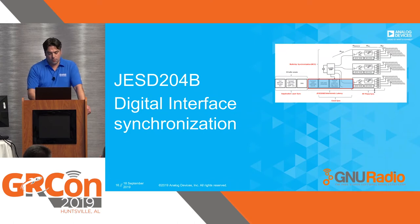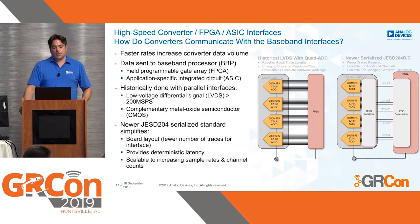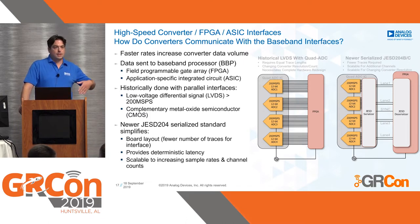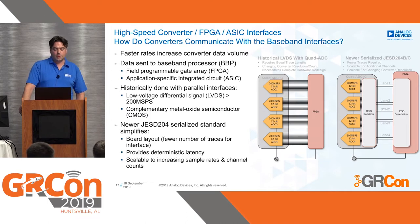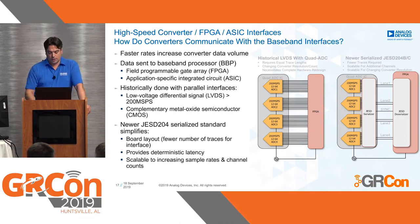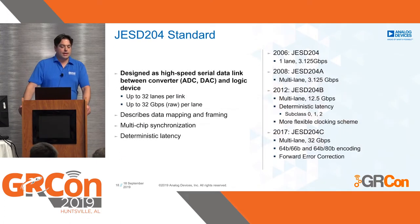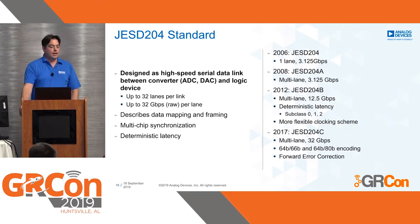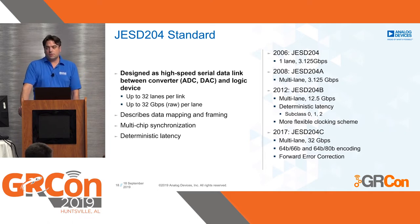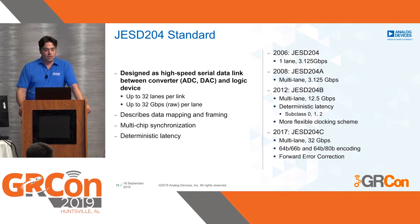Let's look at JESD204 and how it can be synchronized. Traditionally, LVDS parallel interfaces have been used between converters and FPGAs, but as the number of channels increases, this becomes impractical, and higher data rates are limited by electrical signaling. Newer converters use a high-speed serial interface using the JESD204 standard, which is designed as a high-speed serial data link between converter devices and logic devices. It supports up to 32 lanes per link, with lane rates up to 32 Gbps in the latest JESD204C addition.